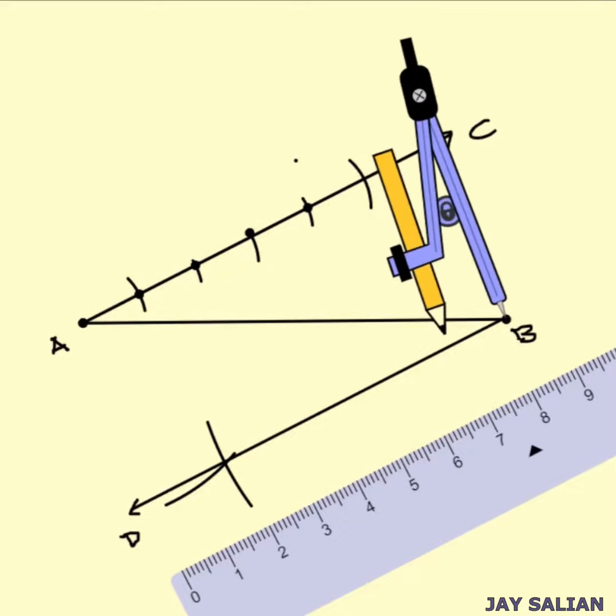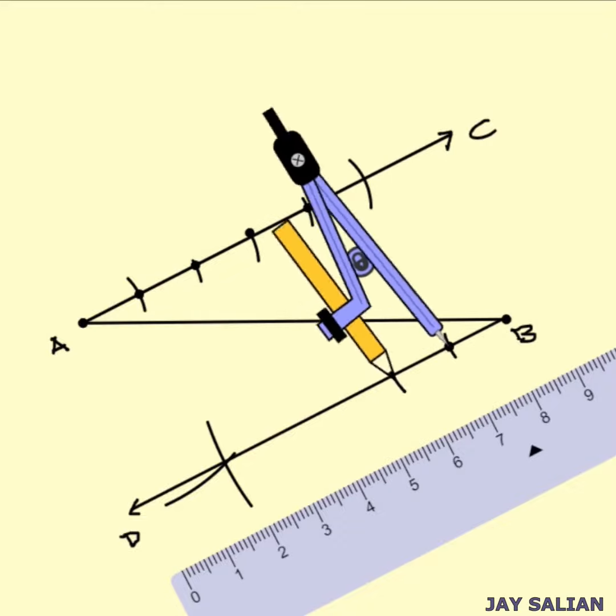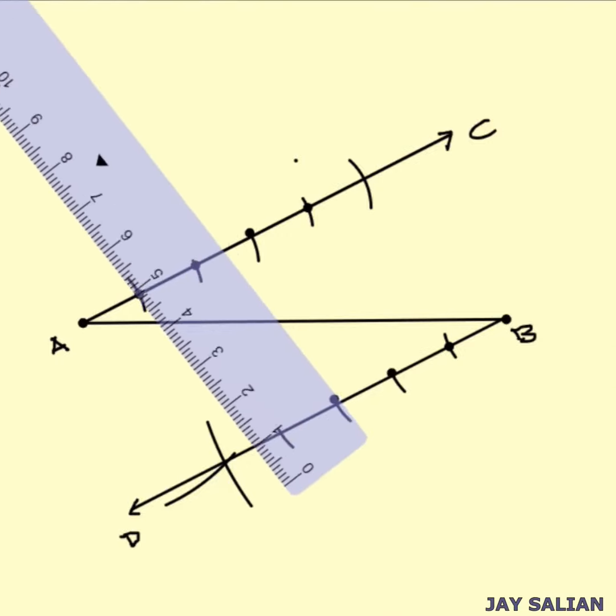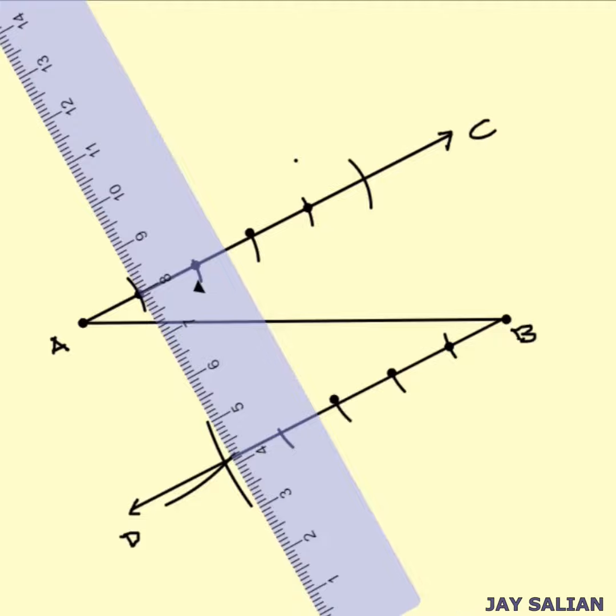This method relies on the fact that corresponding sides in a parallelogram are congruent. By constructing the arcs and lines, we create a partial parallelogram where AC is parallel to the segment created by dividing AB.